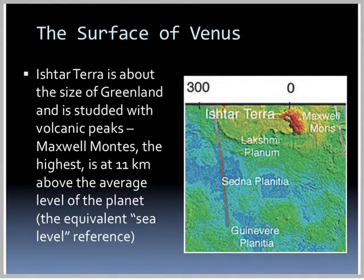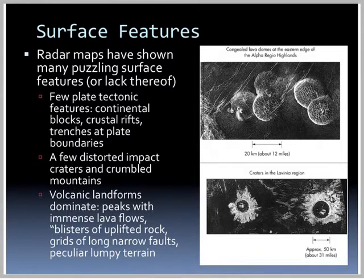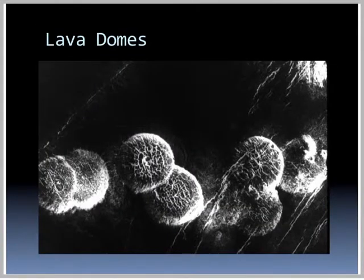Ishtar Terra is about the size of Greenland and is studded with volcanic peaks. Maxwell Montes, the highest, is 11 kilometers above the average level of the planet. Radar maps show very few plate tectonic features — no continental blocks, crustal rifts, or trenches at plate boundaries. Volcanic landforms dominate: peaks from immense lava flows, blisters of uplifted rock, grids of long narrow faults, and particularly lumpy terrain. One feature is lava domes — upwellings of lava that create a dome structure on the surface.